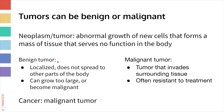Benign tumors are very localized — they stay in one area and tend not to spread to surrounding tissues. They sometimes need to be removed if they get too large or if they become malignant. Malignant tumors are more aggressive, invading tissues next to the tumor. Cancer is specifically a malignant tumor that invades surrounding tissues, so tumors and cancer are not synonymous.